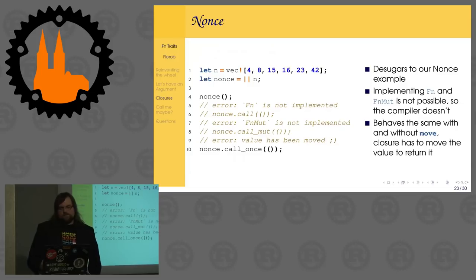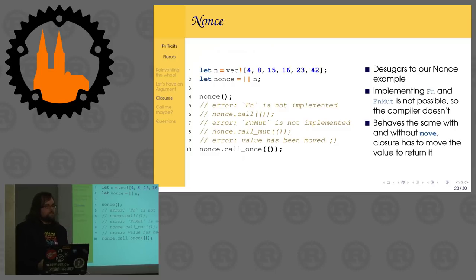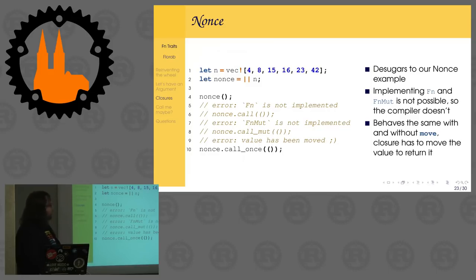Last but not least, our Nonce version looks pretty simple. We have a variable that contains a vector, and our nonce is a closure that returns that variable. You'll notice I did not use move this time. The specific reason is that this closure actually uses the variable in a way that it needs to move it — every time the compiler can directly see that this is a move, it will infer that if I move this variable, I'll also have to move myself. So in this case, only FnOnce is implemented. Having the normal call in line four means you still can't call call_once again because it's been moved.